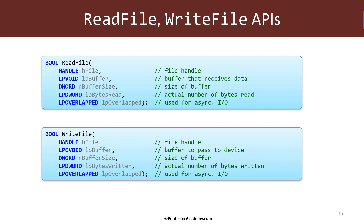The first parameter to both functions is the handle to the file object received from CreateFile. Then we have a buffer — for read, we want that buffer to be filled up with data; for write, we provide that buffer to the device and driver. We also have the size of that buffer, and we get a result saying how many bytes were actually transferred. For example, if I call ReadFile with a buffer sized at 1000 bytes but only get back 300 bytes, the bytes-read parameter — a pointer to a DWORD — tells me how many bytes to look at.